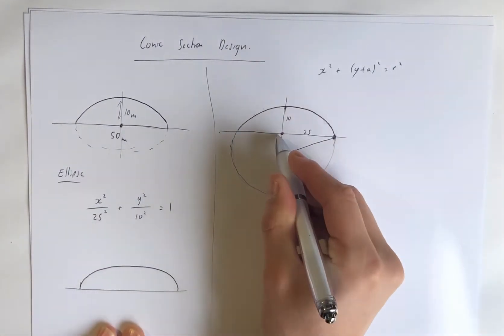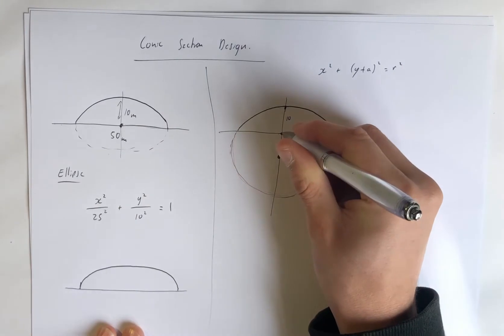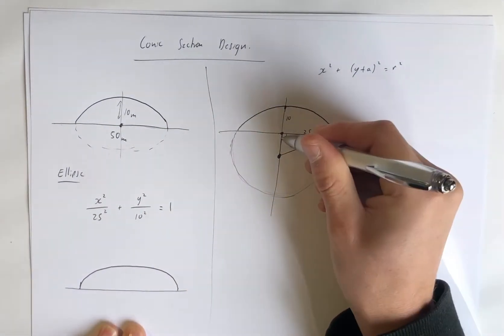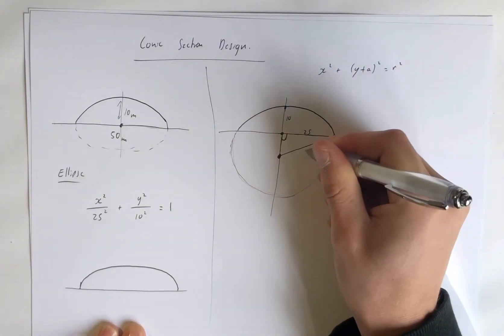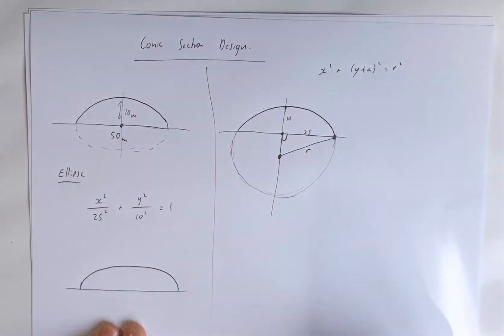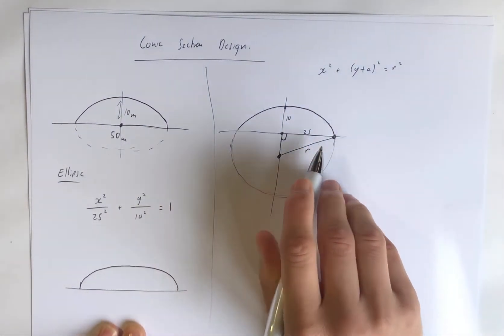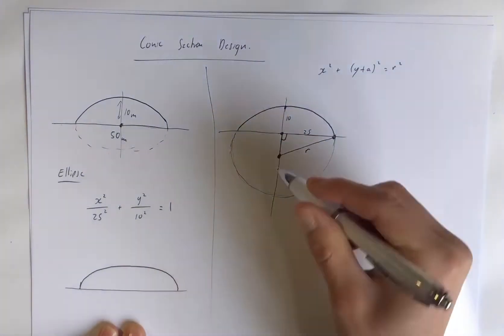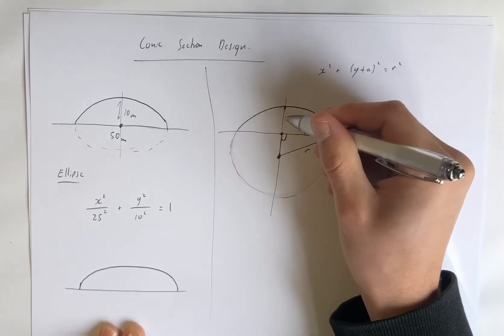There is going to be a right angle triangle. And you'll notice that the hypotenuse is R and we've got one of the other sides. The trick is what is this length here? Well, it's R minus 10.